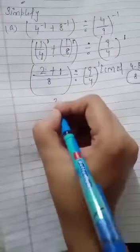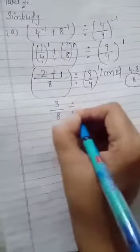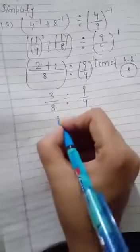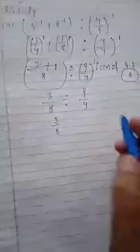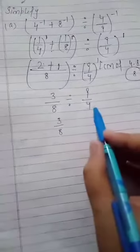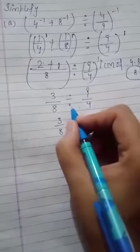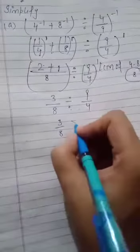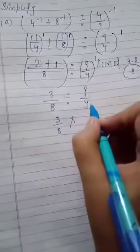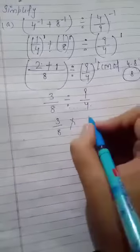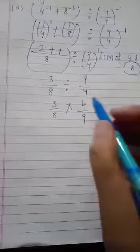2 plus 1, that is 3 by 8, divided by 9 by 4. When we divide fractions, we change the division sign into multiplication. Then the fraction term will be reciprocal. The right-hand side fraction becomes reciprocal.